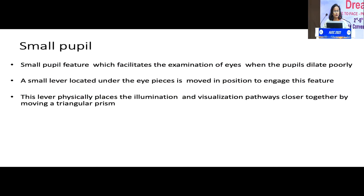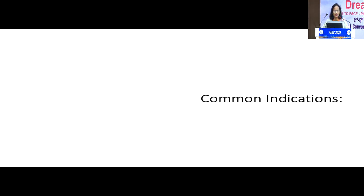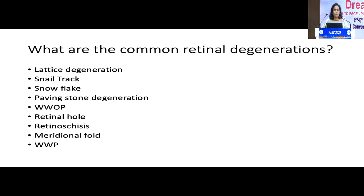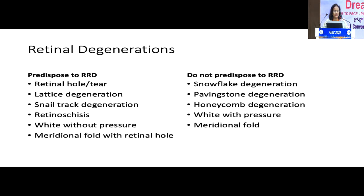We have a small pupil feature which allows us to examine when the pupils are poorly dilated or undilated, facilitated by a small lever which will be discussed in detail later on. The common indications include retinal degenerations ranging from lattice degeneration, snail tracks, snowflake, paving stone degeneration (PSDs), white without pressure, retinal hole, retinoschisis, meridional folds, and white with pressure.